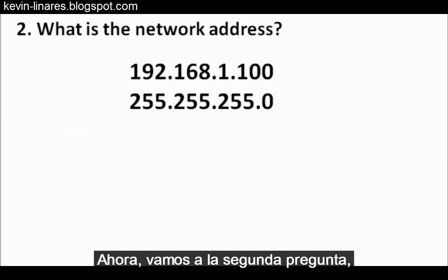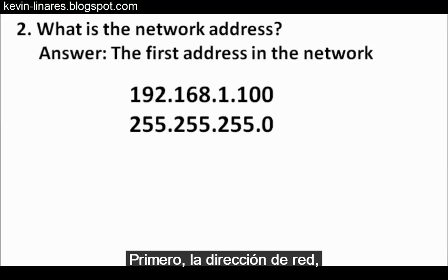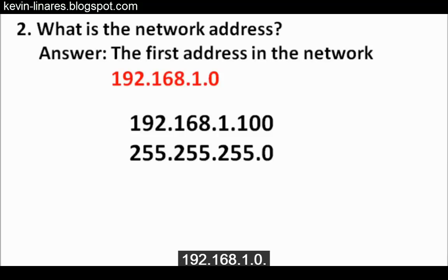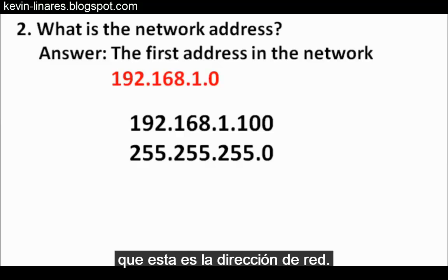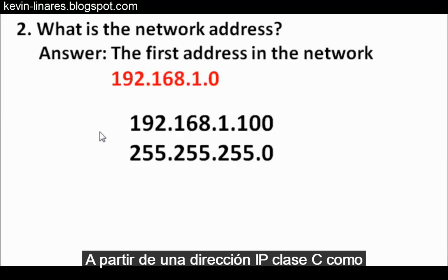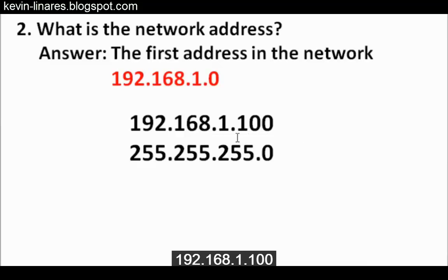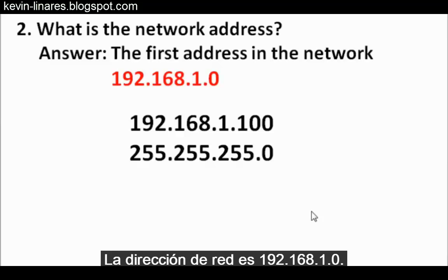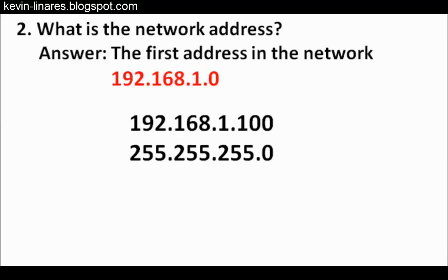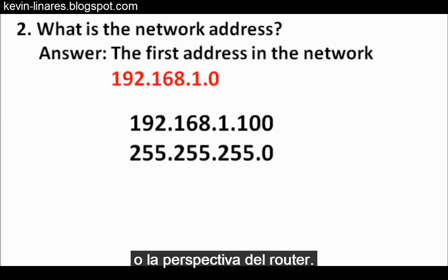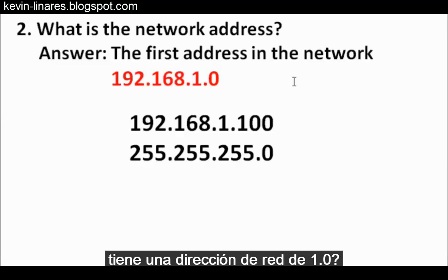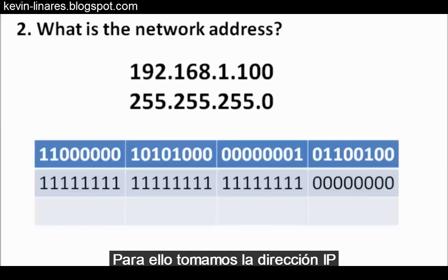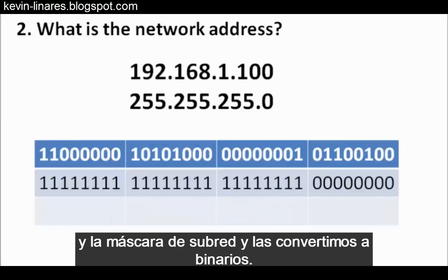Now let's go to the second question: what is the network address? The network address is the first address in the network. In this case, that would be 192.168.1.0. Given a classful Class C IP address like 192.168.1.100 and a classful subnet mask of 255.255.255.0, the network address is 192.168.1.0. But let's look at it from the perspective of the router. To determine this, we take the IP address and the subnet mask and convert them first to binary.